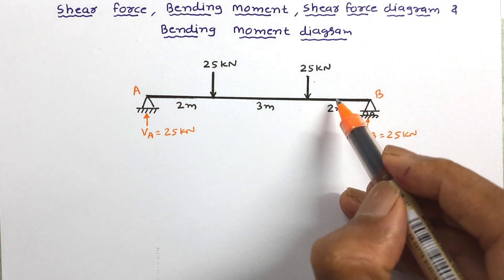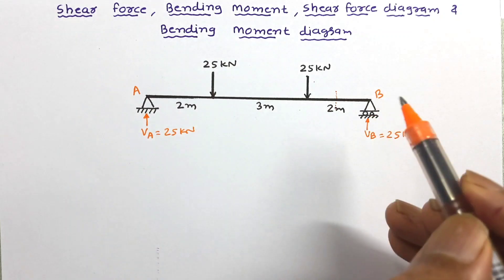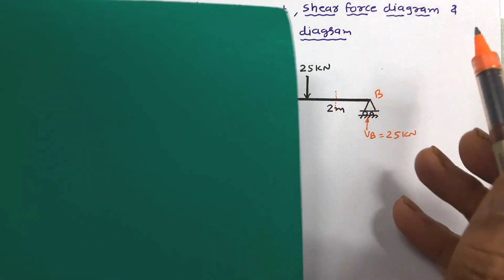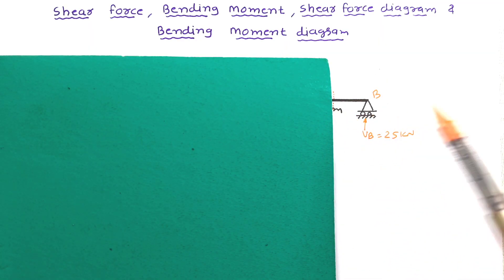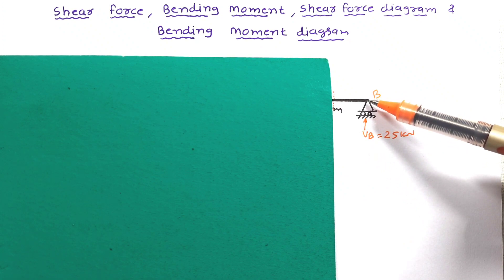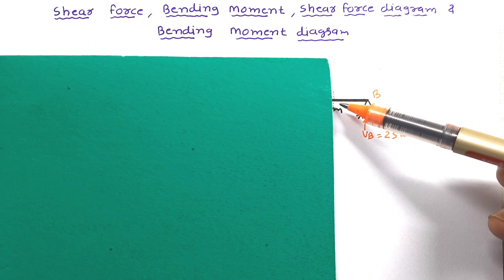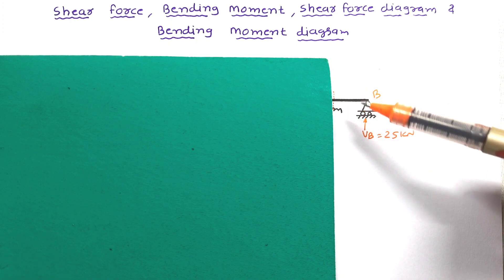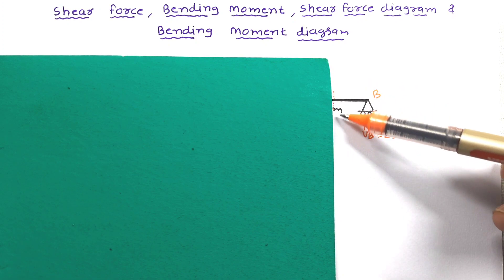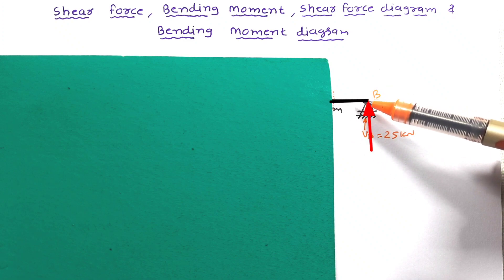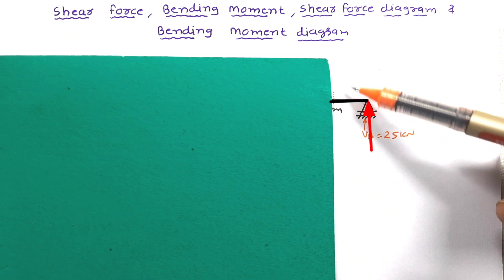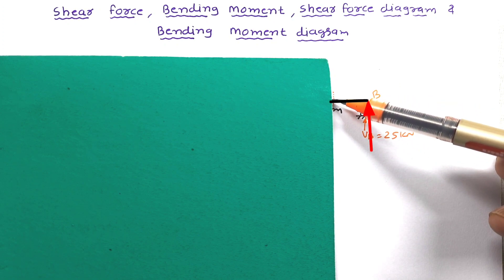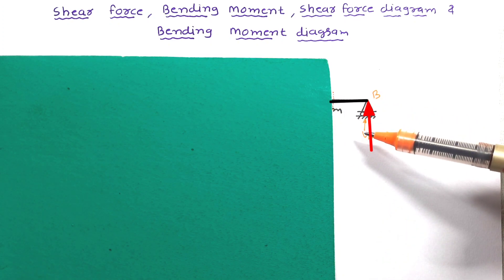Now let us consider one section at this point. Considering only the left part of the beam at this section, this 25 kN force is acting in the upward direction. So in this portion, there is an unbalanced force of 25 kN which tries to push the beam in the upward direction. Such unbalanced force on either side of any section of a beam is called shear force.